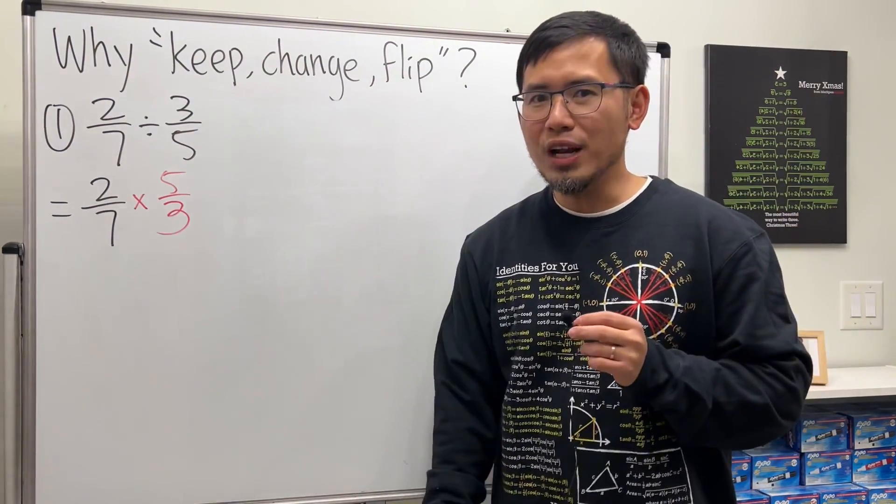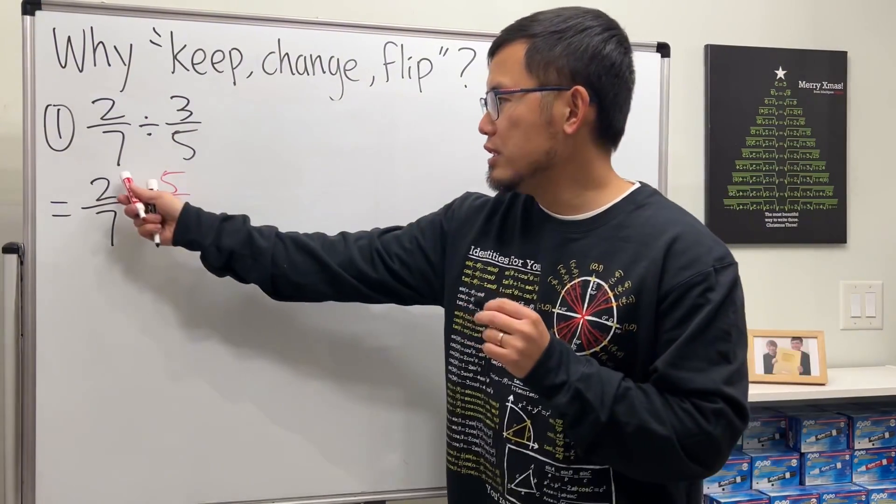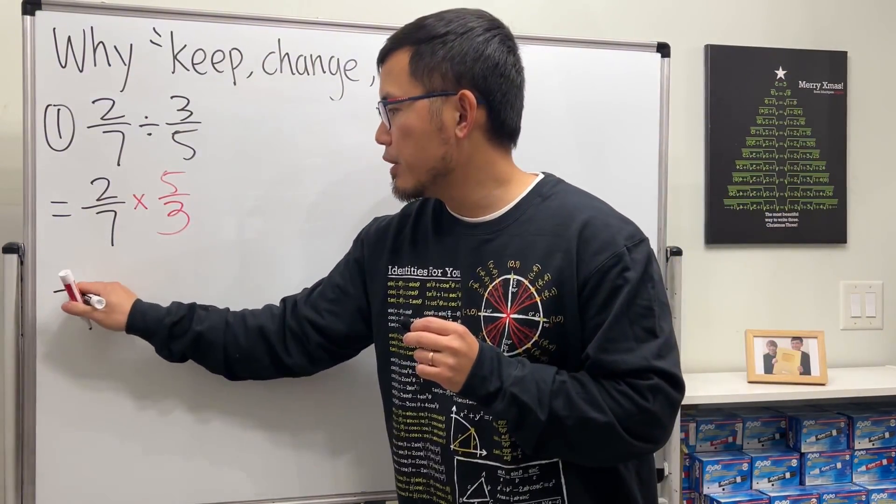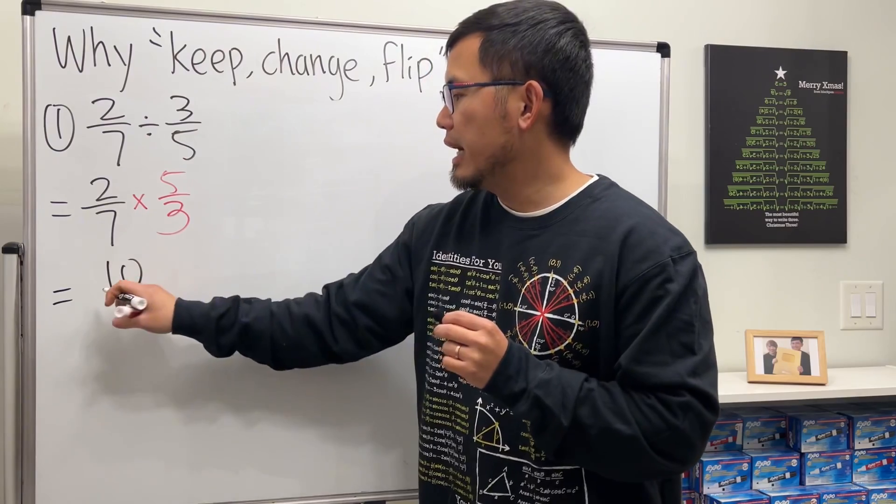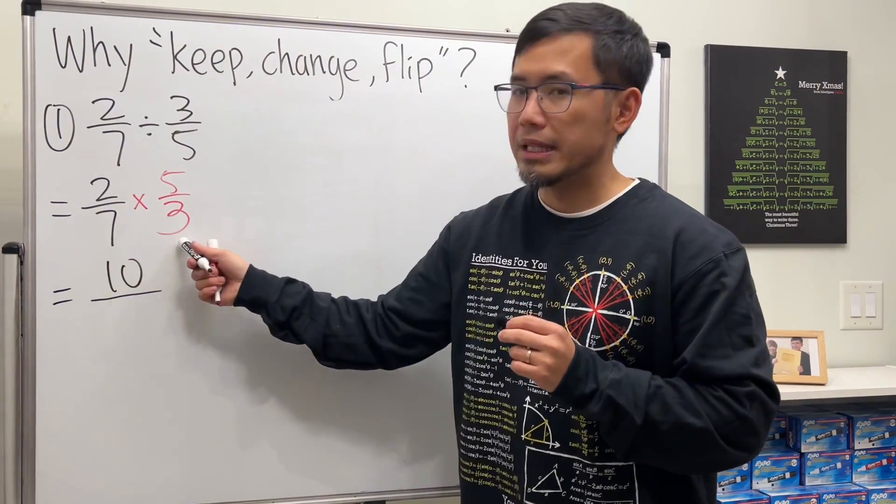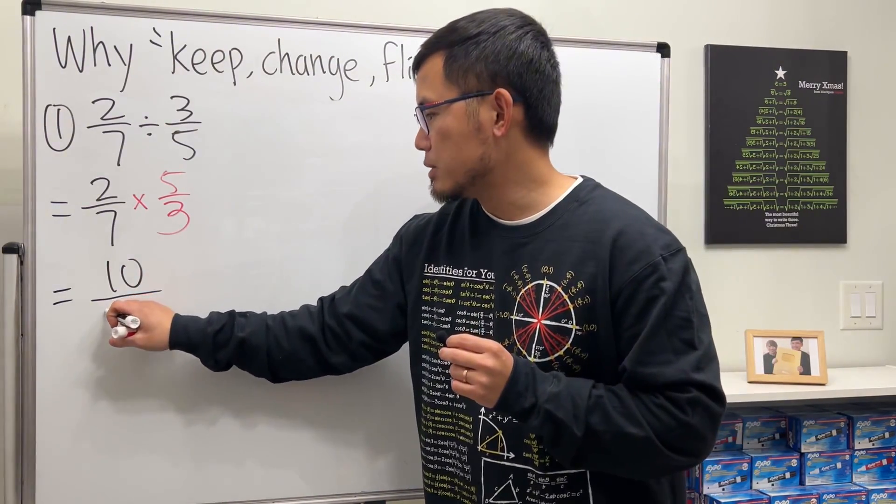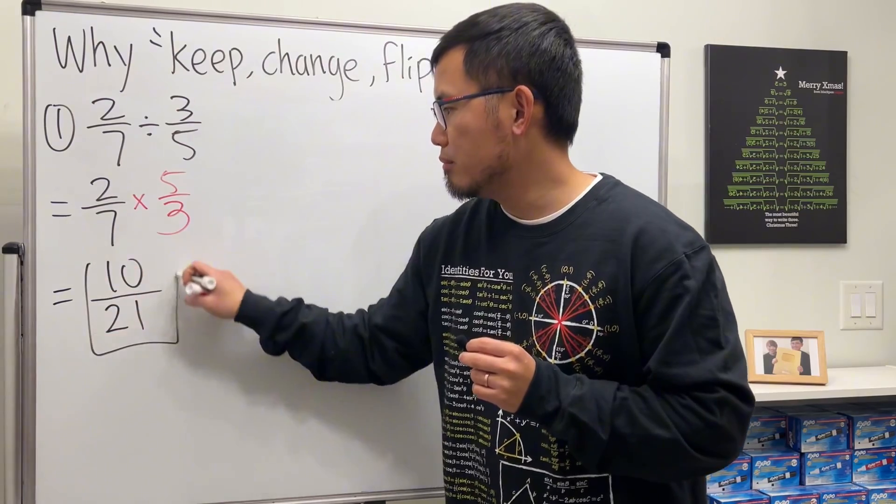And now we can just multiply these two fractions. To do so, we just need to multiply the numerators. 2 times 5, we get 10. And then over, and we multiply the denominators. 7 times 3, we get 21. And that's the answer.